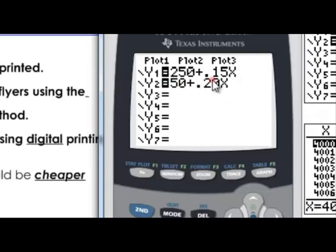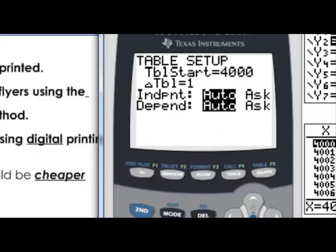If we're going to look at our table and our graph, we have to have our equations in our calculator. So we come over to our calculator and put them in: 250 plus .15x, 50 plus .20x. Those are my two equations. And I want to look at the table.